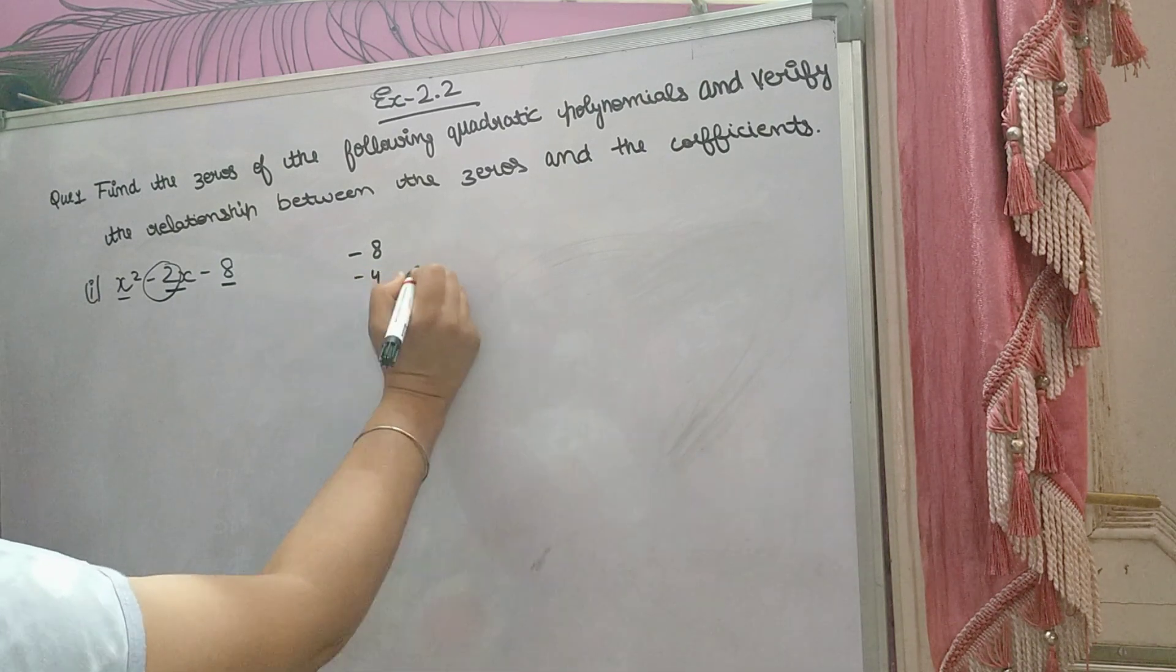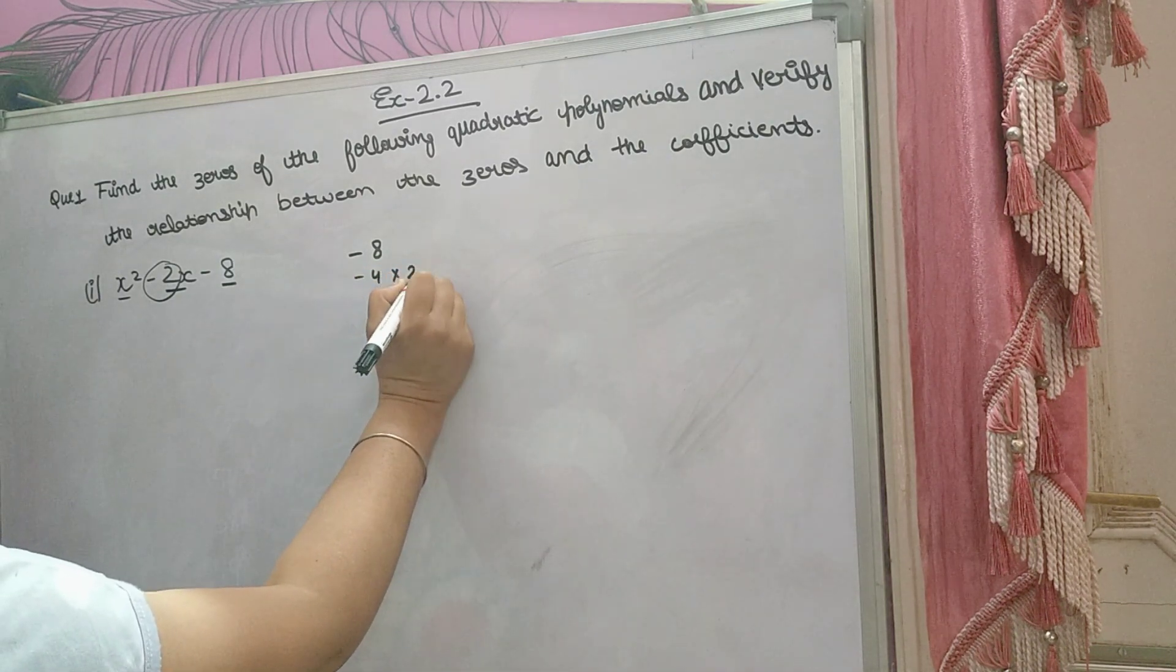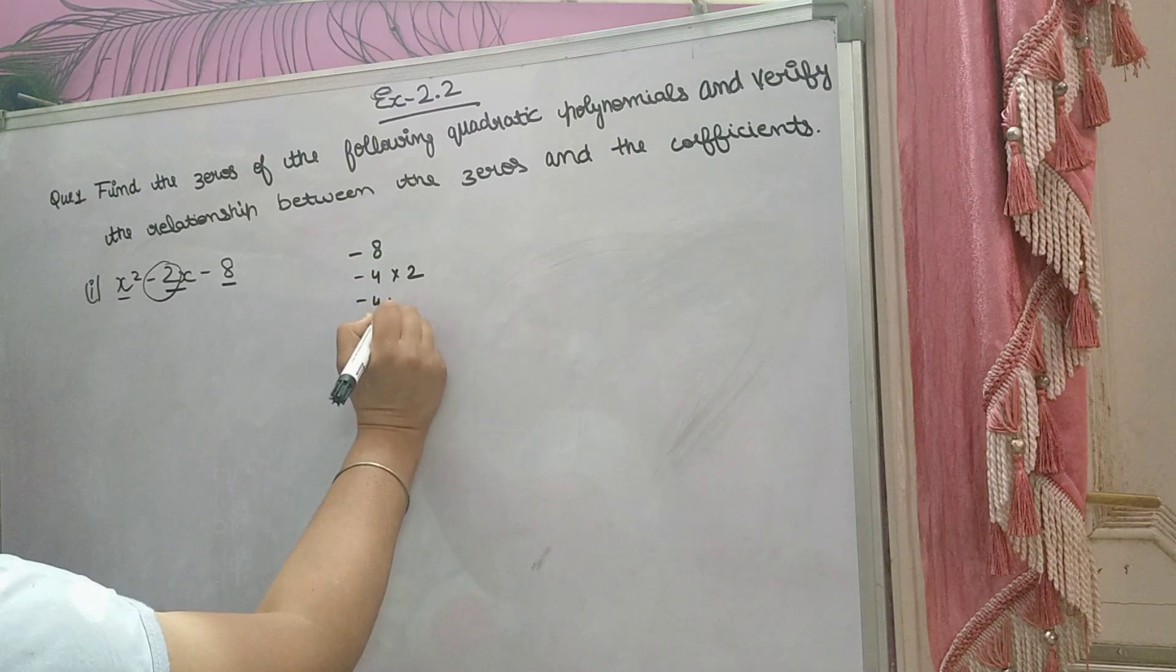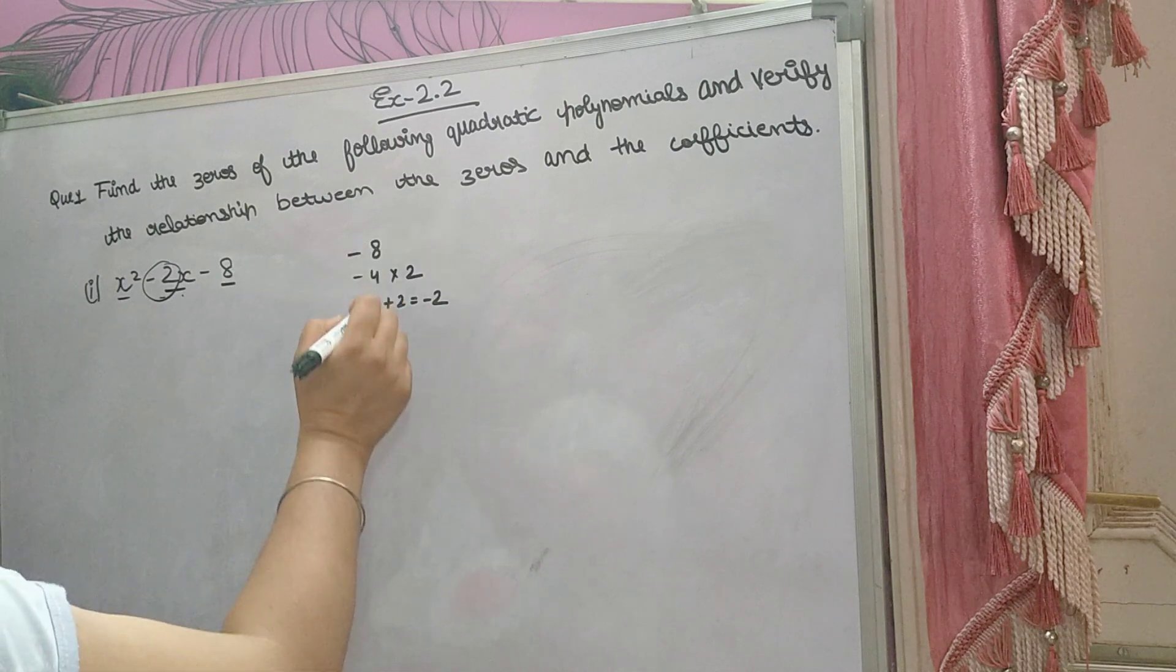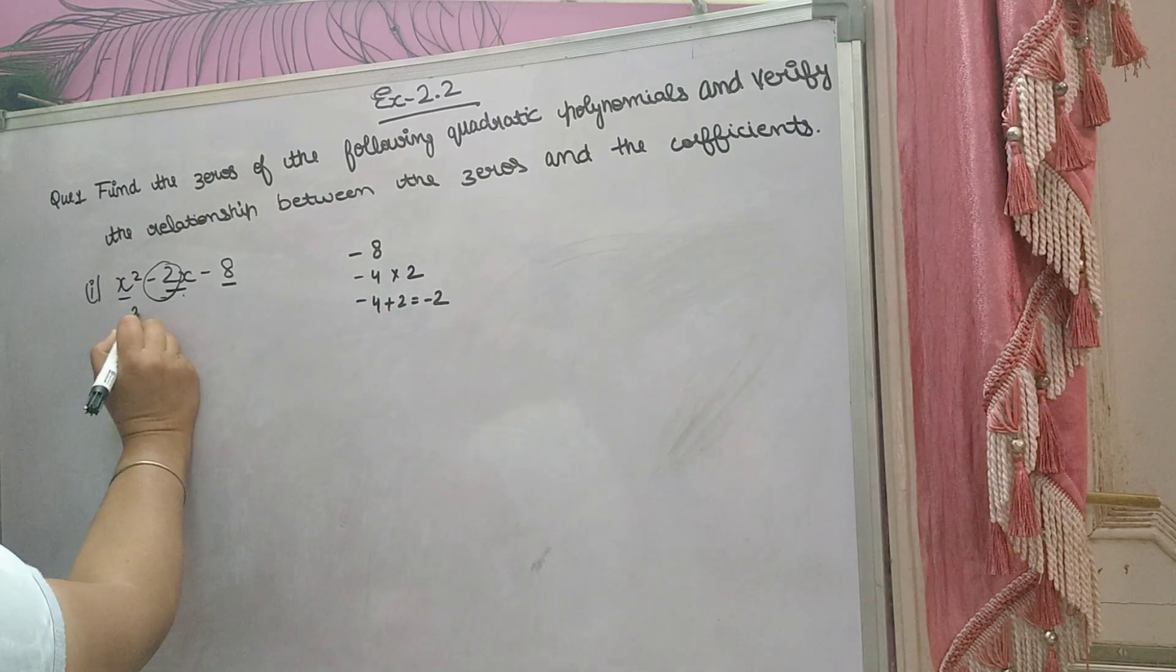Minus 8 is there, so minus 4 into 2. Suppose you are taking these factors. Now see minus 4 plus 2 is minus 2. That means you are getting this term. That means your factors are correct. Now you will do factorization.